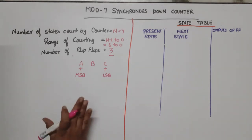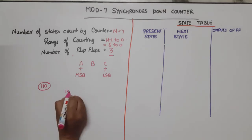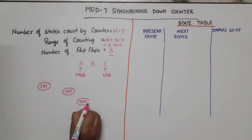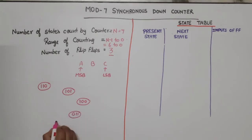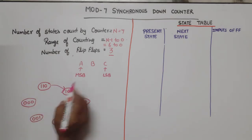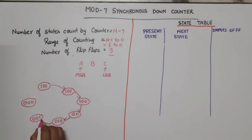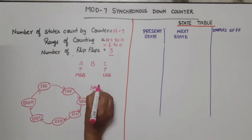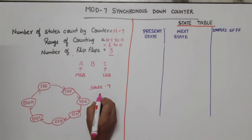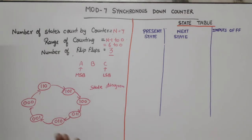This counter will count 7 states. The first state will be 6 (binary 1-1-0). After 6 comes 5, then 4, then 3, then 2, then 1, then 0, and then it loops back to 6. So the sequence is 6 → 5 → 4 → 3 → 2 → 1 → 0 → 6. This is the state diagram of the mod 7 down counter. The state diagram is the same regardless of which flip-flop type you use.